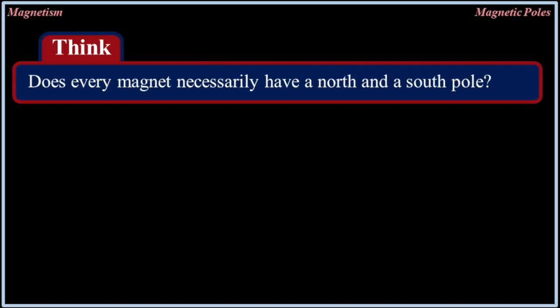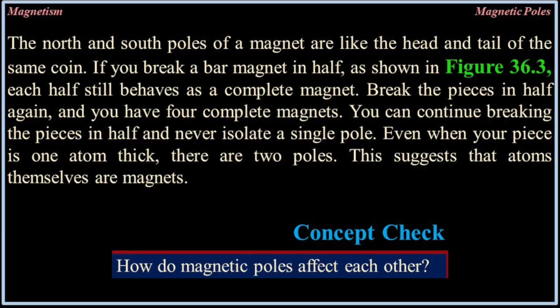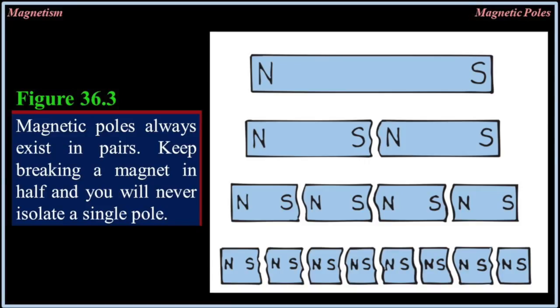Does every magnet necessarily have a north and a south pole? Yes. Just as every coin has two sides, a head and a tail, some trick magnets have more than two poles. The north and south poles of a magnet are like the head and tail of the same coin. If you break a bar magnet in half, each half still behaves as a complete magnet. Break the pieces in half again and you have four complete magnets. You can continue breaking the pieces in half and never isolate a single pole. Even when your piece is one atom thick, there are two poles. This suggests that atoms themselves are magnets.